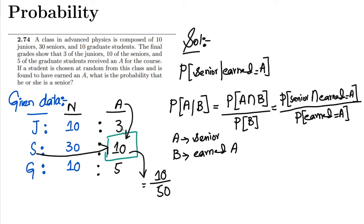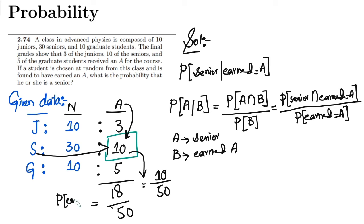Do we know the probability of earning an A? Yes, because we can see that 3 plus 10 is 13, plus 5 is 18 — so there are 18 students who attained grade A, while the total number of students was 50. So the probability of attaining grade A is also known.